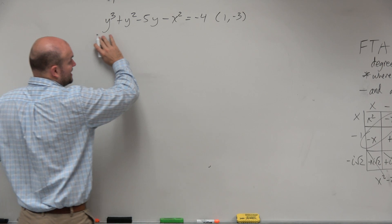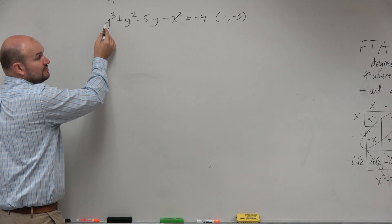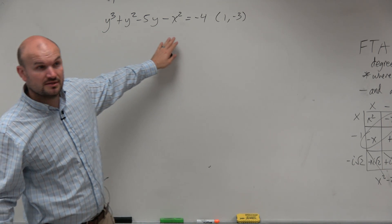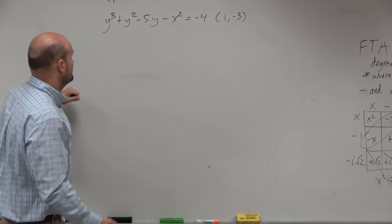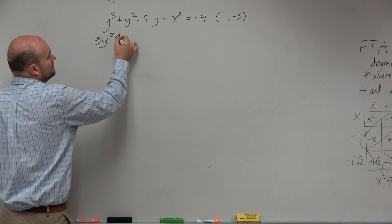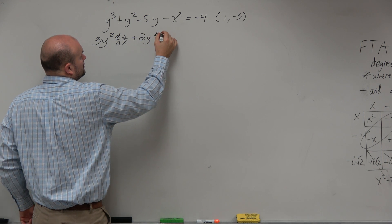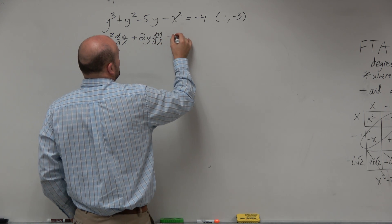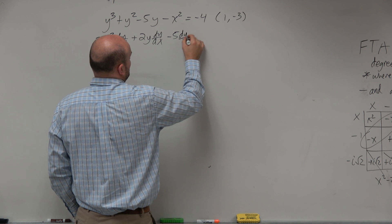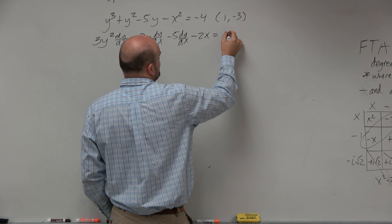So if we're taking the derivative of both sides dy/dx, we're basically taking the derivative of each one of these terms with respect to x. So just to kind of save some time: 3y² dy/dx plus 2y dy/dx minus 5 dy/dx minus 2x equals 0.